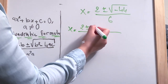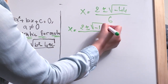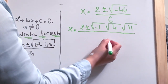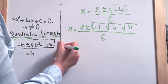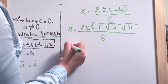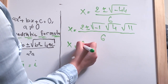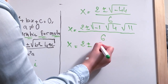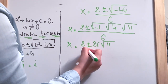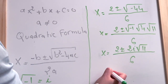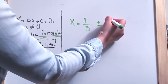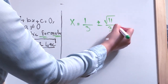So x equals 2 plus or minus square root of minus 1 multiplied by square root of 4 multiplied by square root of 11, over 6. We know the square root of minus 1 equals i, so we write x equals 2 plus or minus i, and square root of 4 equals 2, times square root of 11, over 6. Simplifying, x equals 1 over 3 plus or minus square root of 11 over 3 times i.